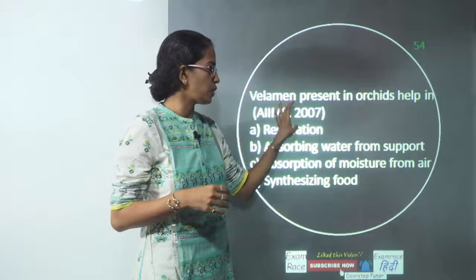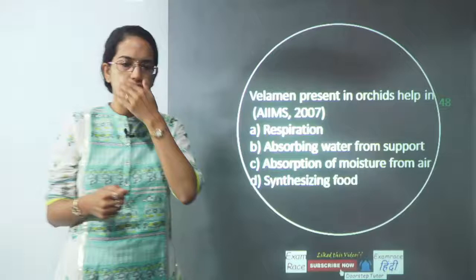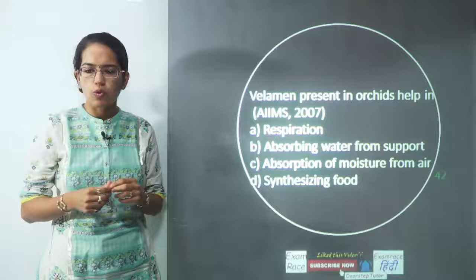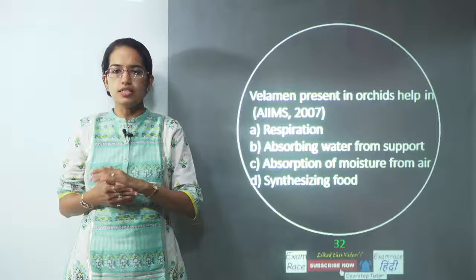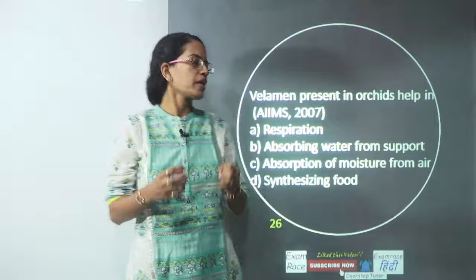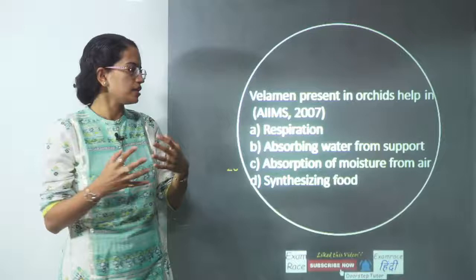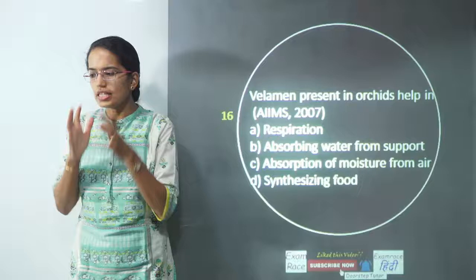The first question is about Velamen and its presence in orchids — what is its actual role? Velamen are non-living compact cells that help in the absorption of moisture. So absorption of moisture is the correct answer, and C gets the correct answer.